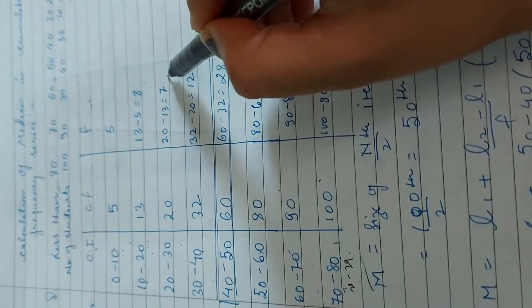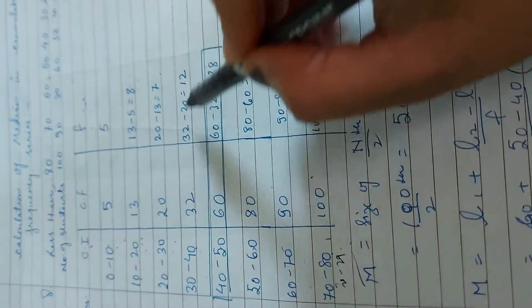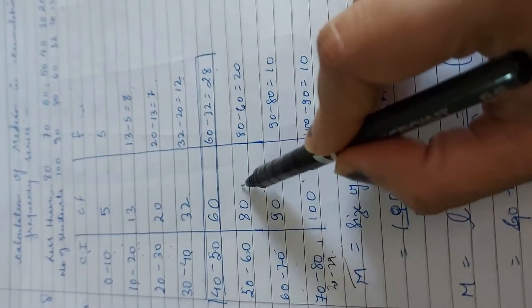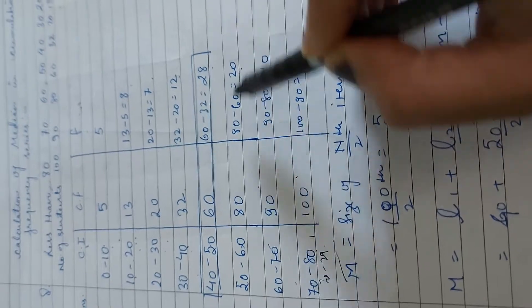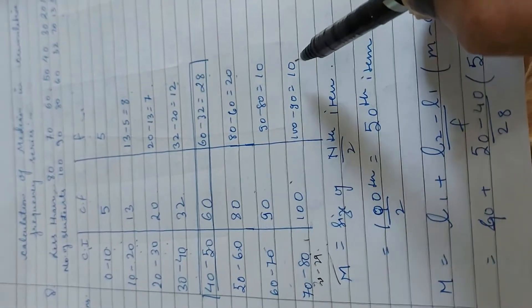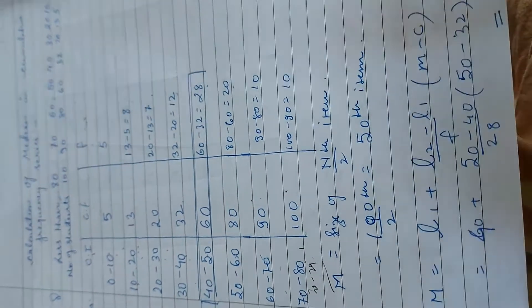20 minus 13, then it will be 7. 32 minus 20, then it will be 12. 60 minus 32, then it will be 28. 80 minus 60, then it will be 20. 90 minus 80, then it will be 10. And 100 minus 90, then it will be 10.